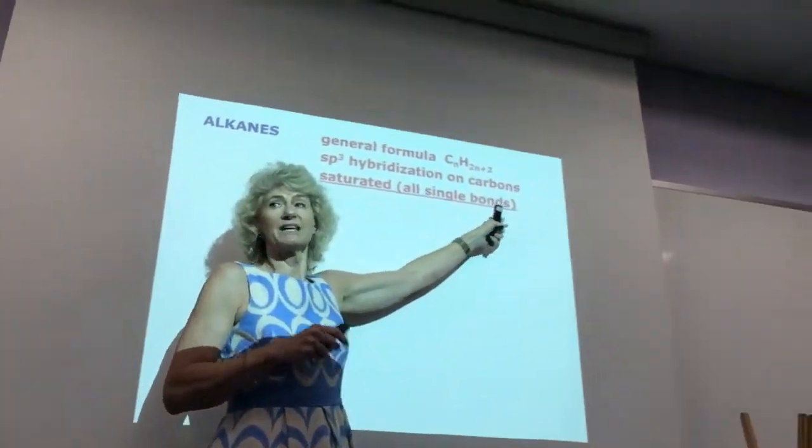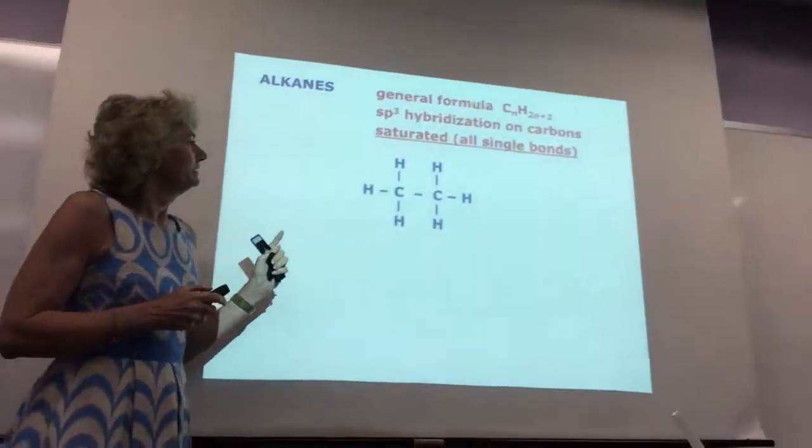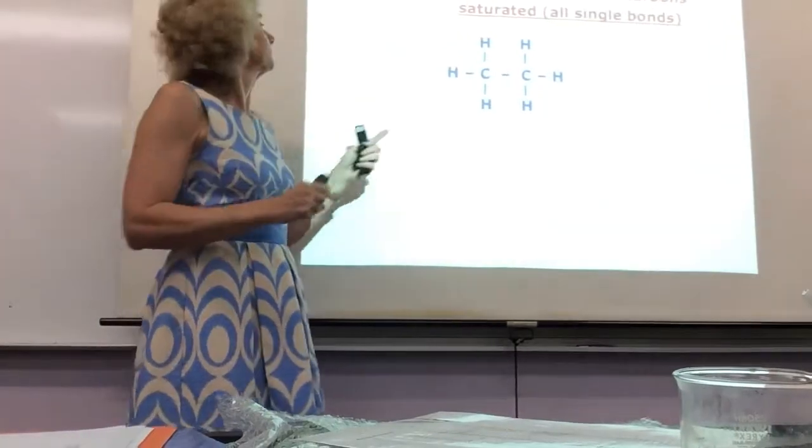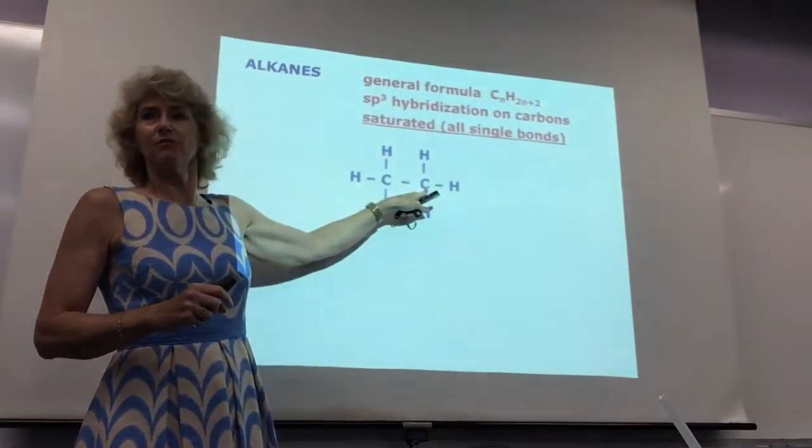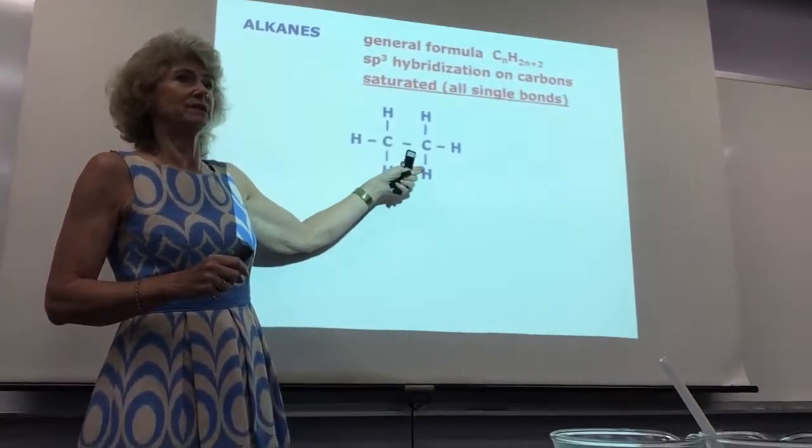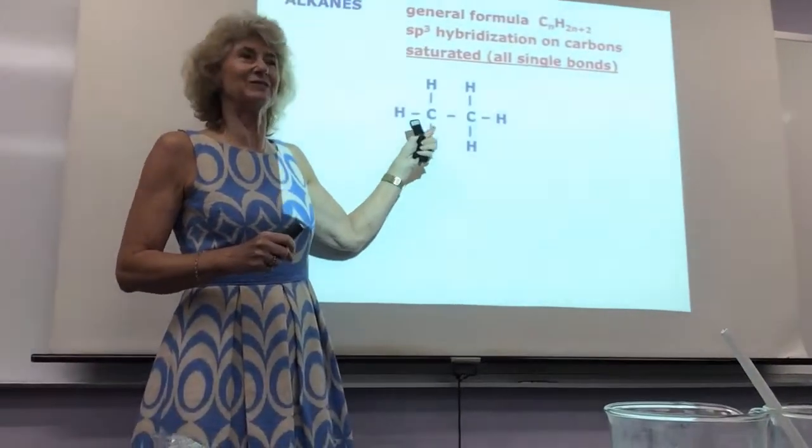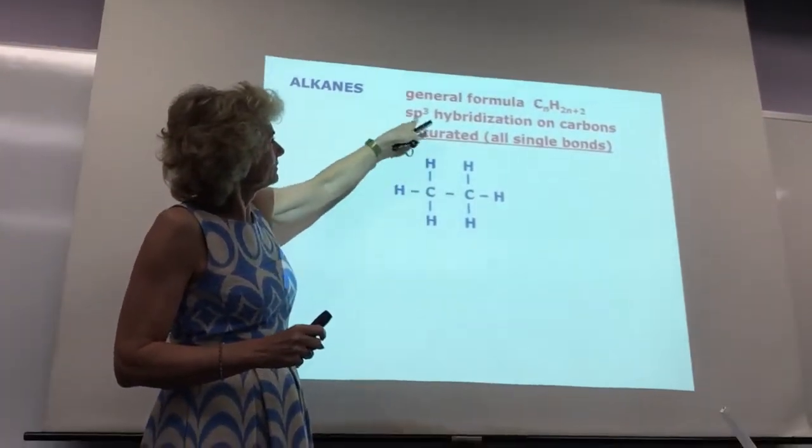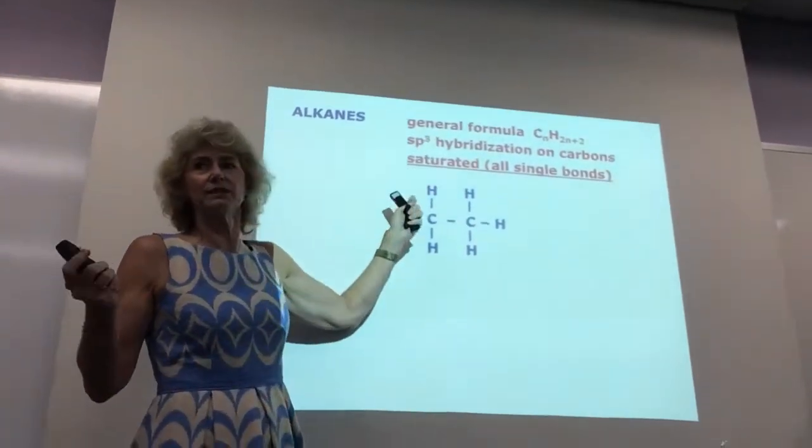So all of these are single bonds and it ends in ANE. Here's a typical one. They're just straight. Remember, carbon makes four bonds, so it's either bonded to another carbon or a hydrogen. No double or triple bonds. So what's the hybridization? One, two, three, four, SP3. Really easy.